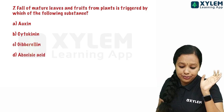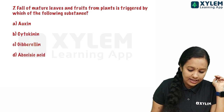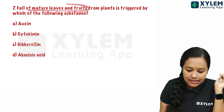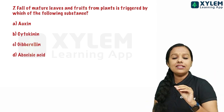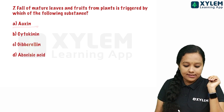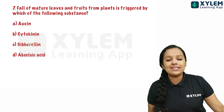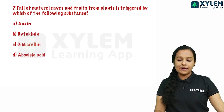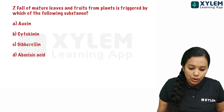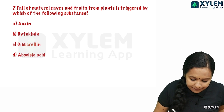The seventh question: the fall of mature leaves and fruits from plants is triggered by which substance? The options are auxins, cytokinin, gibberellin, and abscisic acid. If you know the functions of plant hormones, you can answer. The answer is abscisic acid.